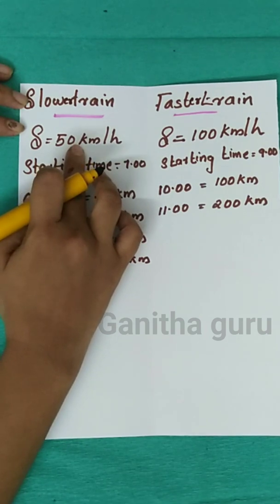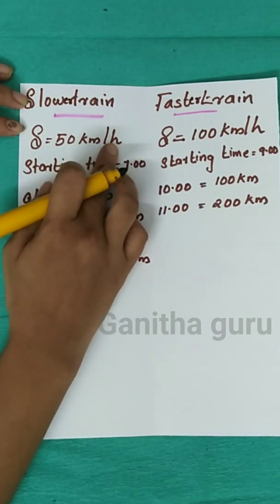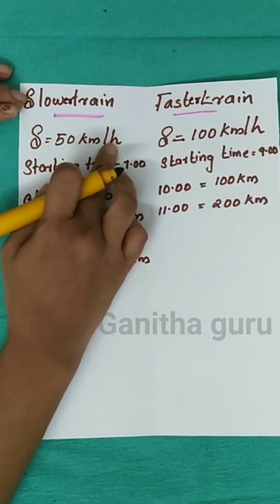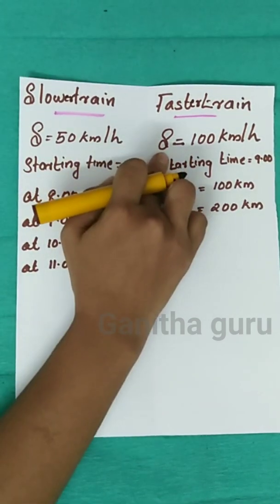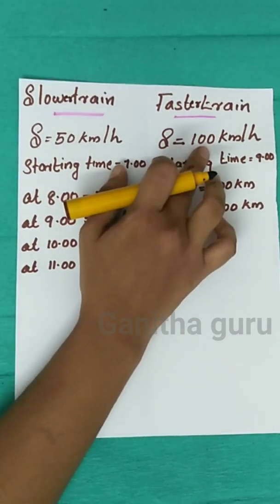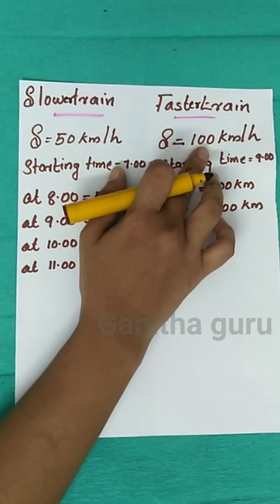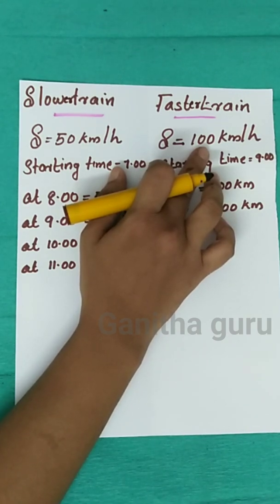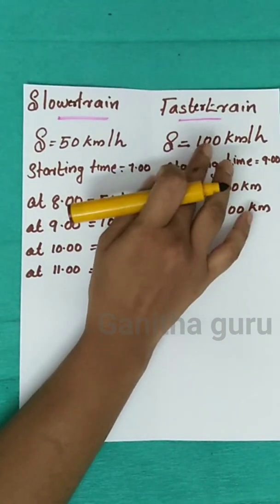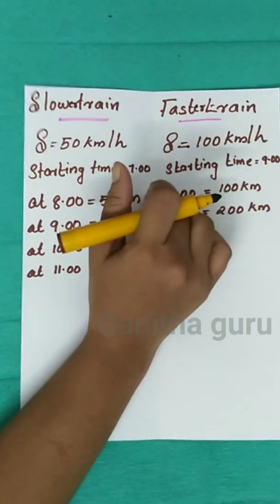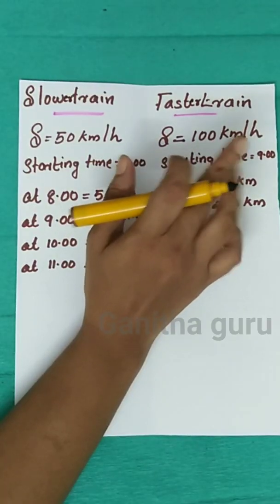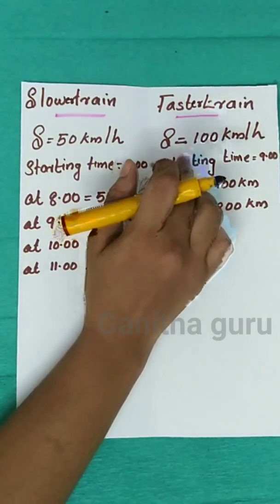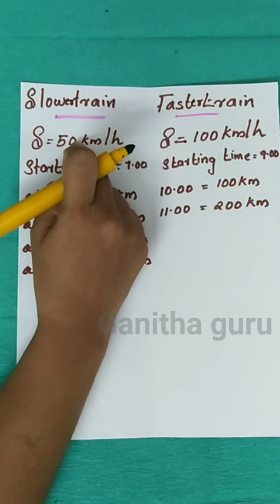The slower train's speed is 50 km per hour and the faster train's speed is 100 km per hour. Since the faster train starts 2 hours later, the slower train has a head start of 100 km.